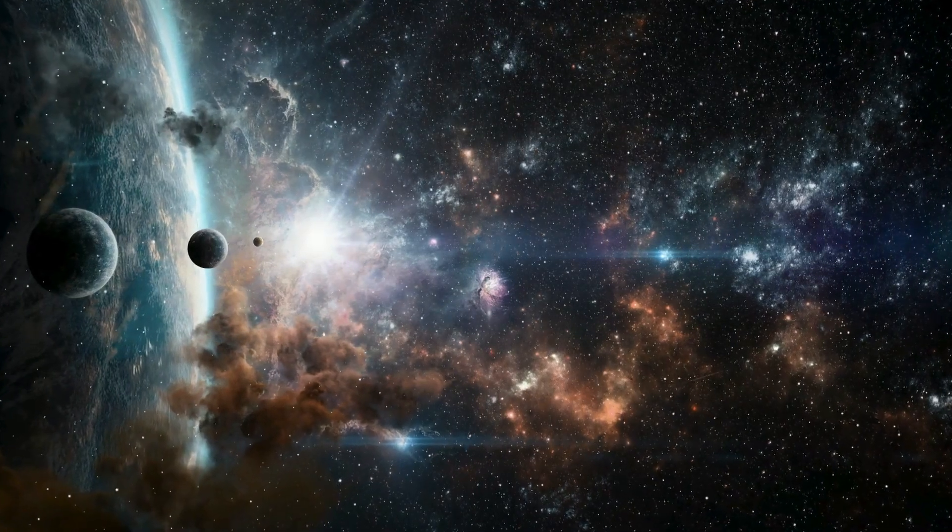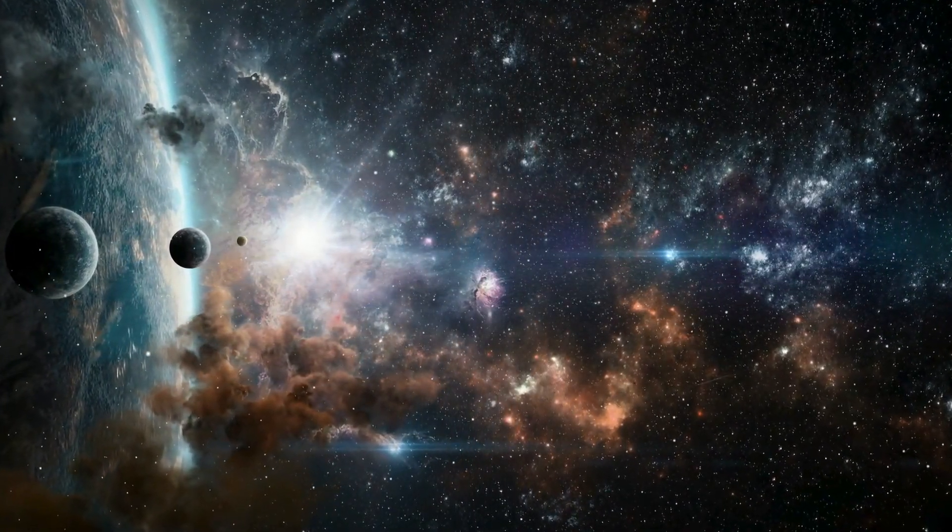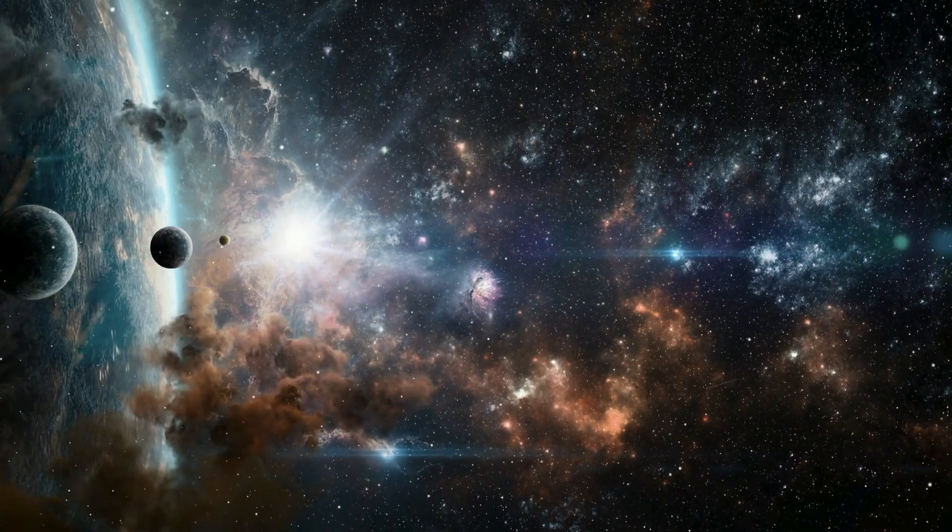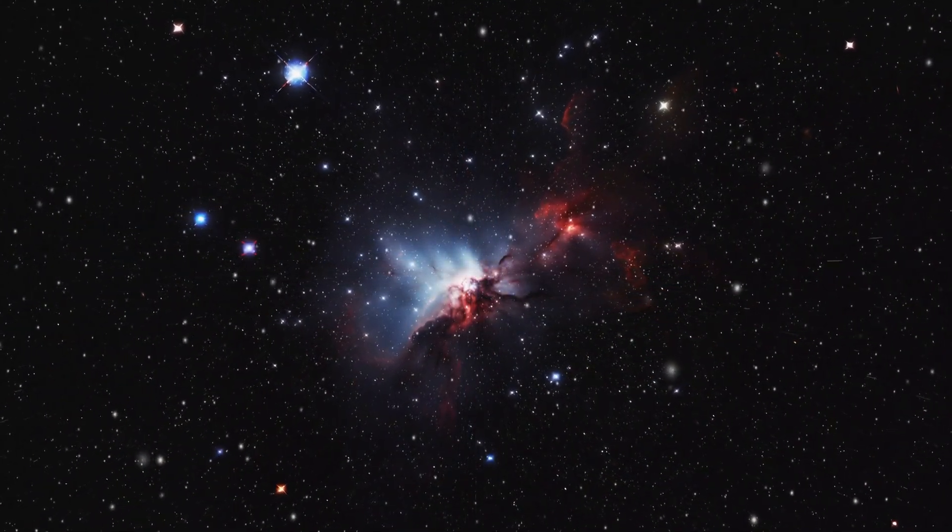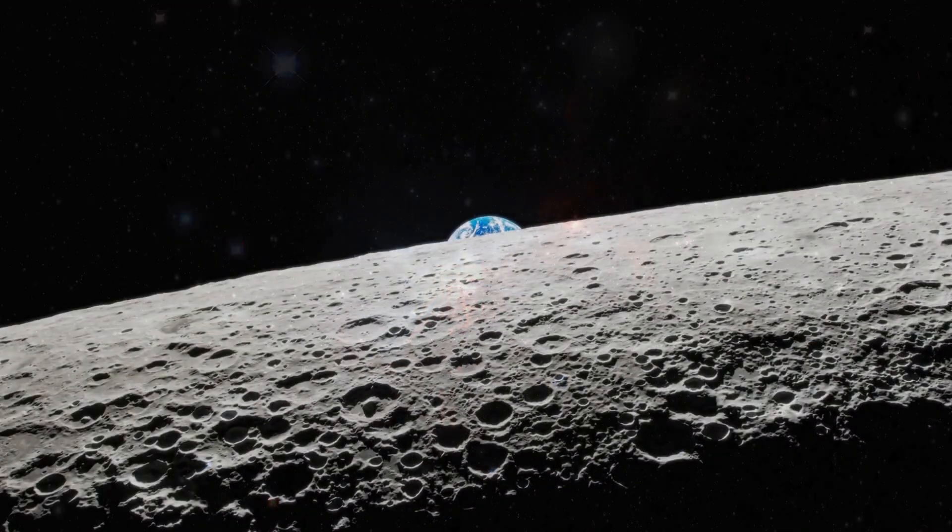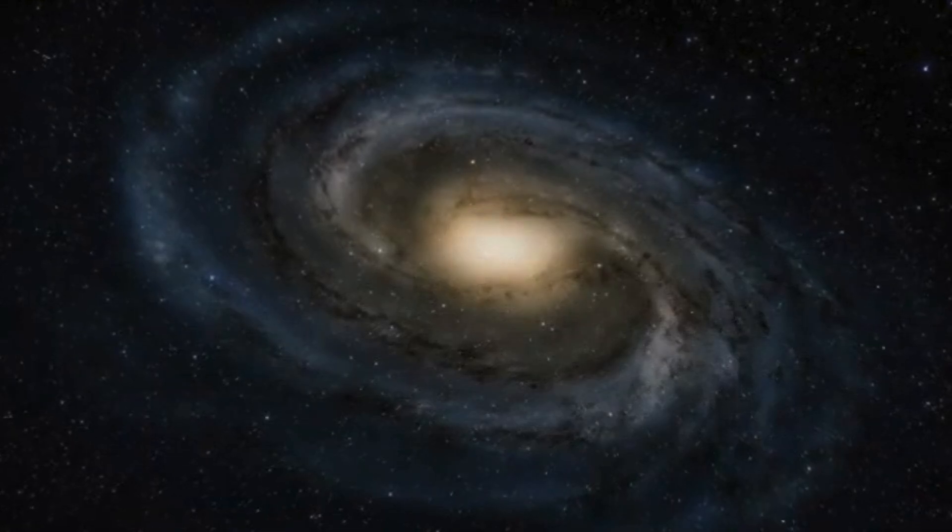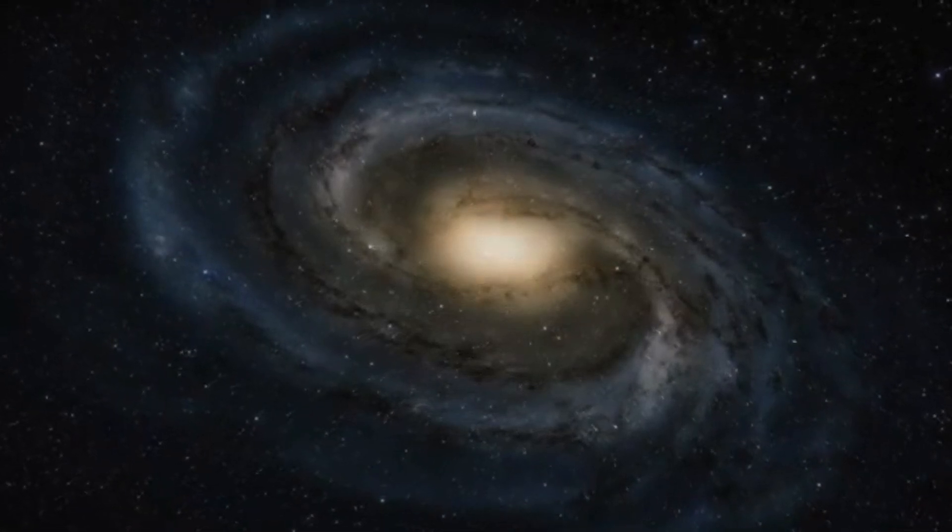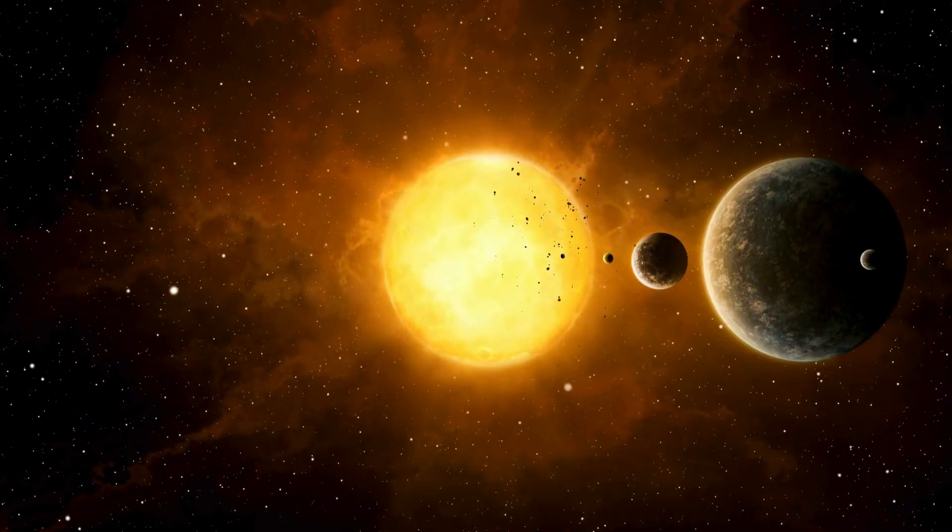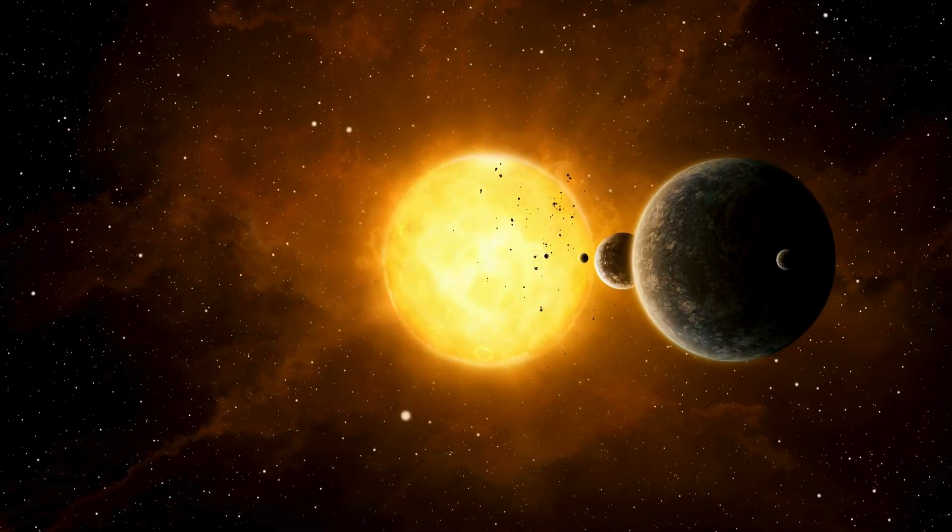While the odds of a GRB impacting Earth are slim, the threat of nearby supernovae remains a concern. Stars nearing the end of their life cycles, such as Betelgeuse, a red supergiant located about 640 light-years away, are being closely monitored.